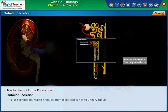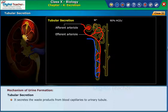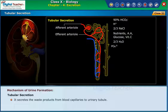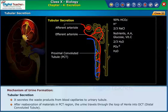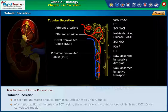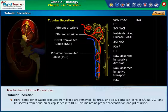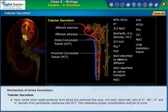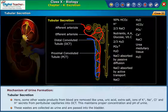Tubular secretion. It secretes the waste products from blood capillaries to the urinary tubule. After reabsorption of materials in the PCT region, the urine travels through the loop of Henle into the DCT, distal convoluted tubule. Here, some other waste products from blood are removed, like urea, uric acid, extra salt, and ions of potassium, sodium, chloride, and hydrogen, which secrete from peritubular capillaries into the DCT. This maintains proper concentration and pH of urine. These wastes are collected as urine and passed into the bladder.